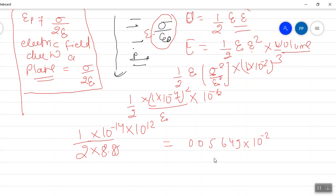This is question number 43. The answer is five point six four nine into ten to the power minus four Joules. This is the energy stored.